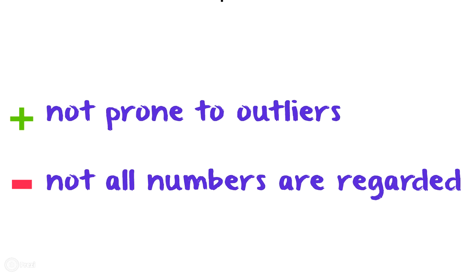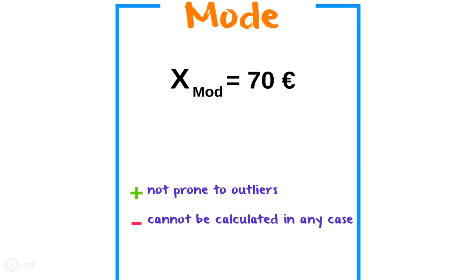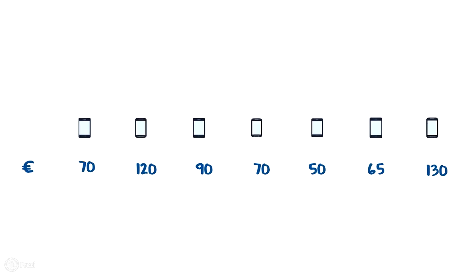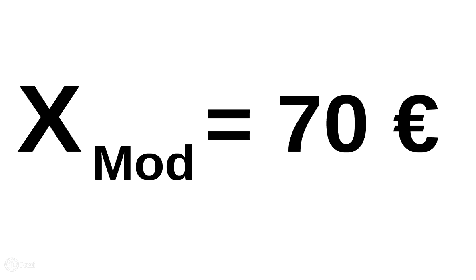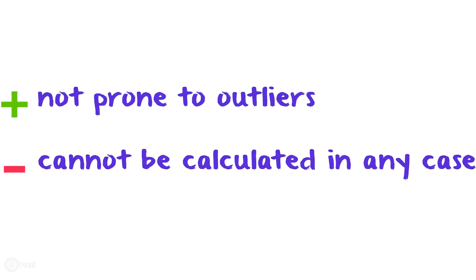Last but not least, we are going to calculate the mode. The mode is the number which occurs most often in our statistical series. In our case, two different smartphones are offered at a price of 70 euros, which means the mode is 70 euros. A big advantage of the mode is that it is not prone to outliers, since only the most frequent number is relevant. A disadvantage is that the mode cannot always be calculated — for instance, when each price is different, there would be no mode.